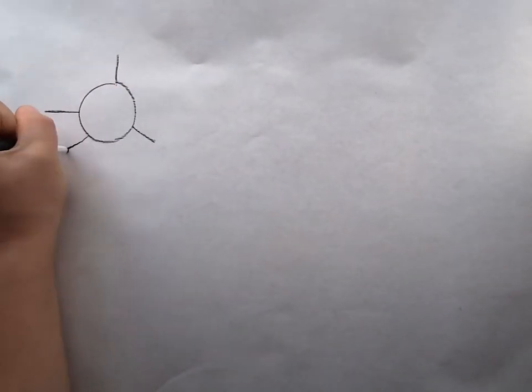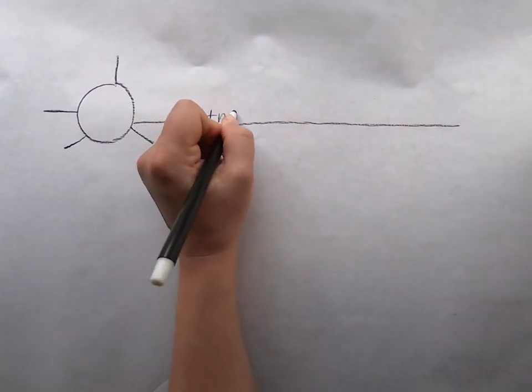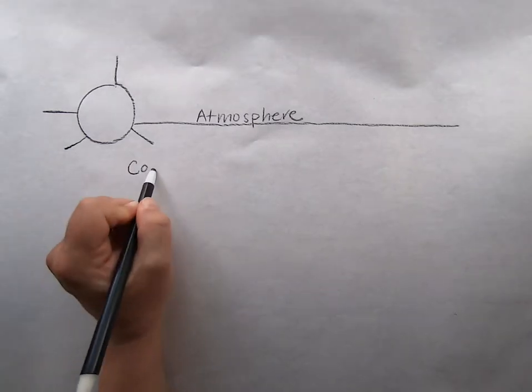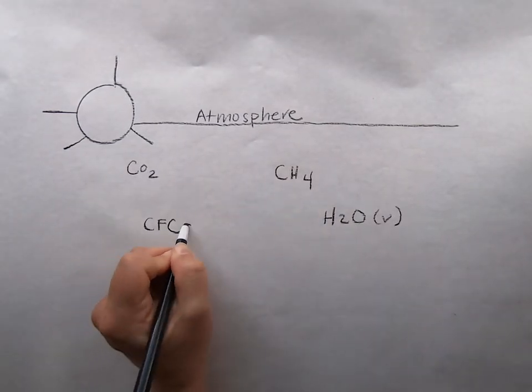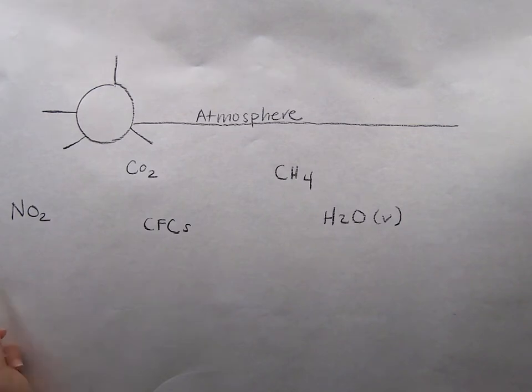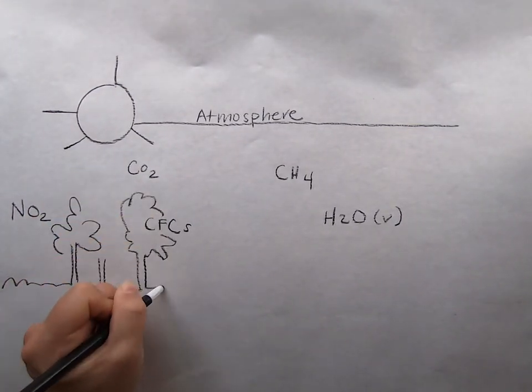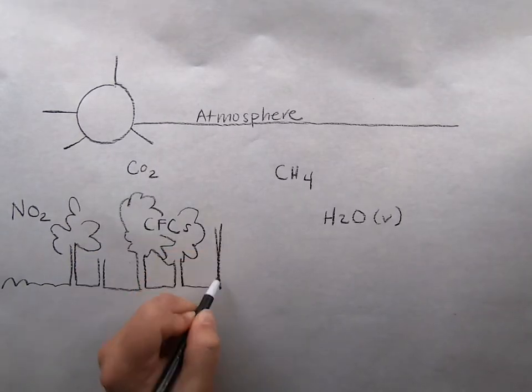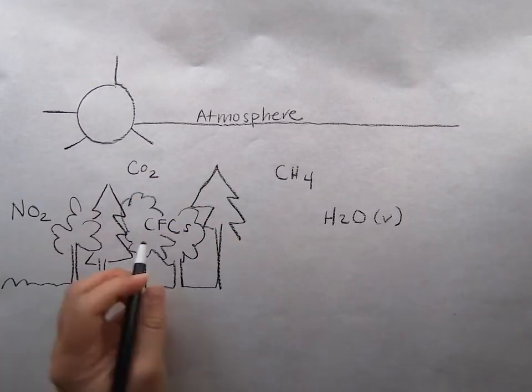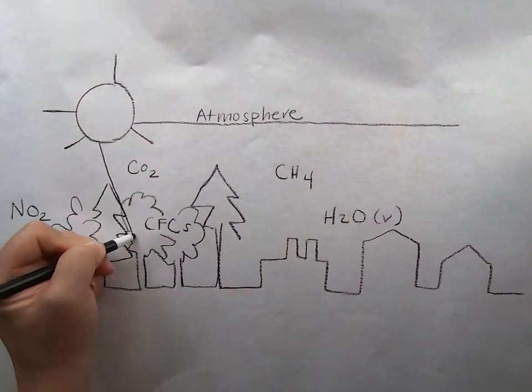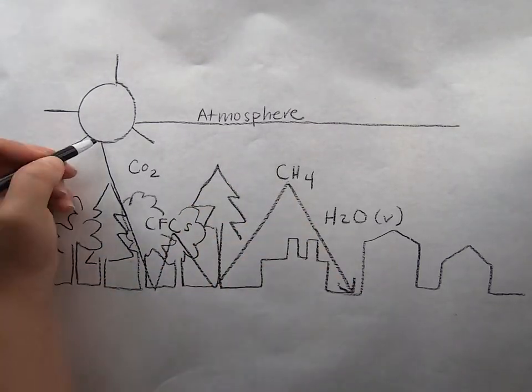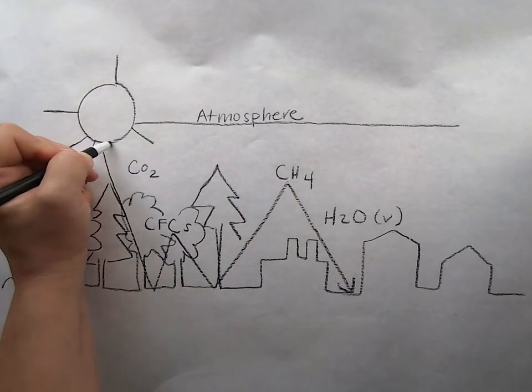Storing more carbon than they release is important because carbon in our atmosphere is a component of two greenhouse gases, carbon dioxide and methane. And they, along with other greenhouse gases, play a role in our global climate by regulating the Earth's temperature, because they can reflect and trap sunlight energy in our atmosphere.